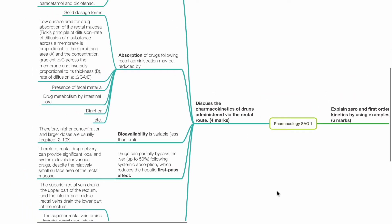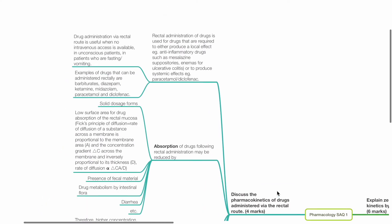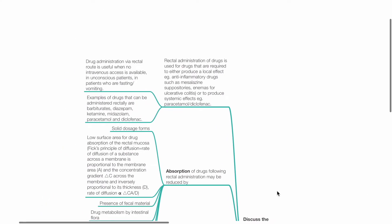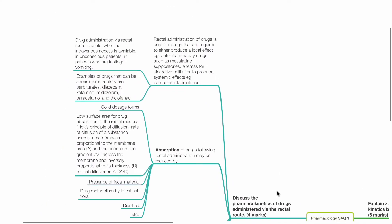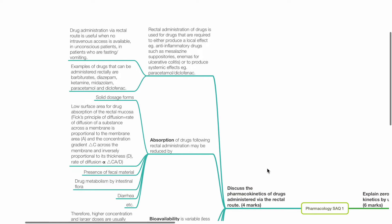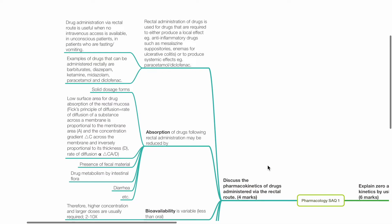Discuss the pharmacokinetics of drugs administered via the rectal route. Rectal administration is used for drugs required to produce either a local effect — for example, anti-inflammatory drugs such as mesalazine suppositories or enemas for ulcerative colitis — or systemic effects, for example paracetamol and diclofenac.